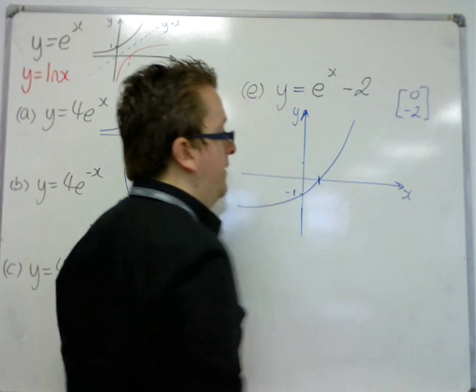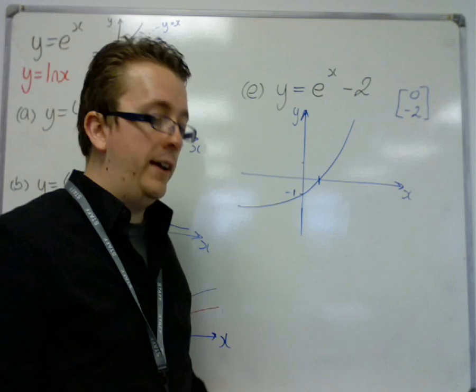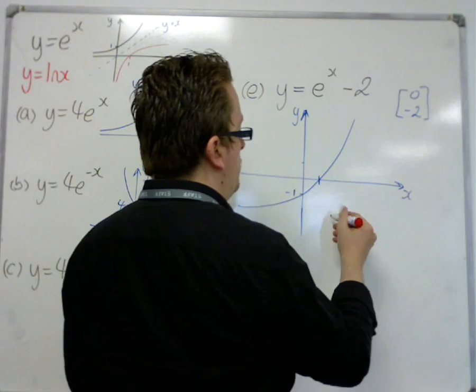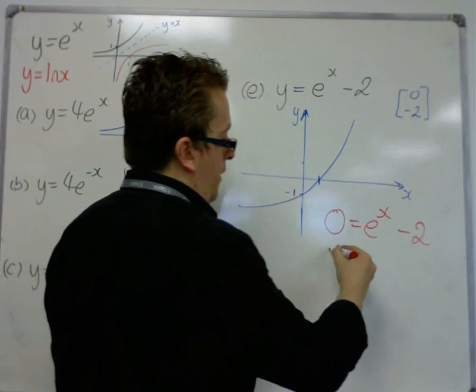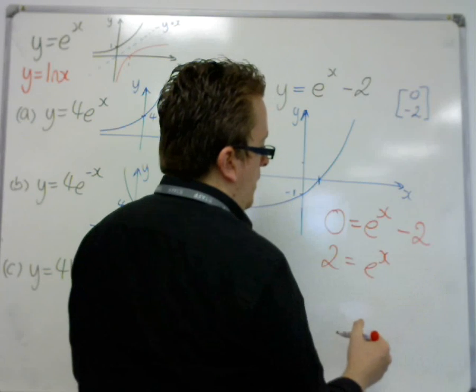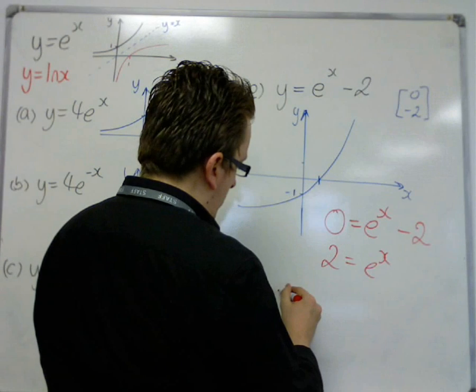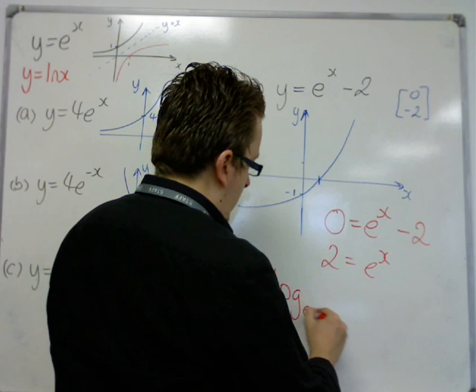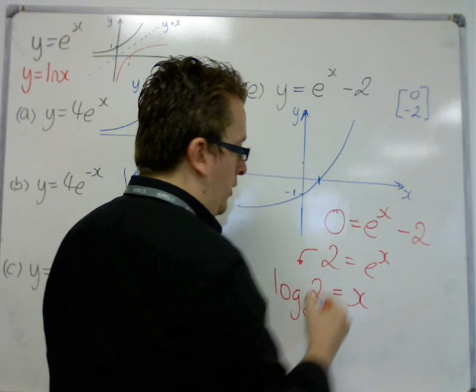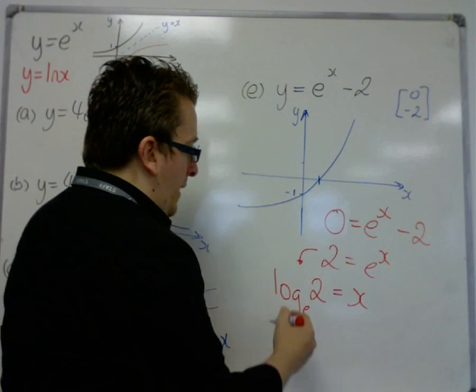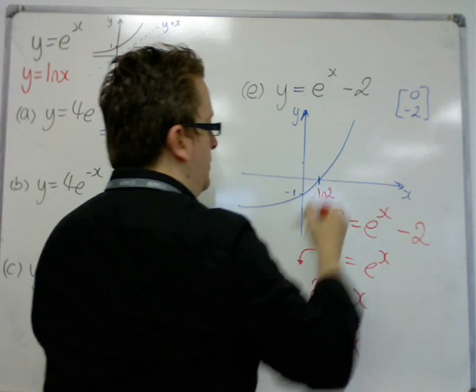Now, on this type of question, if this was an exam question, it's likely that we would also be asked to find where is it crossing the x axis. So, that is when y is 0. So, if I add 2 to both sides, then using our understanding of logarithms, then log e of 2 is equal to x. So, this is the conversion using core 2 logarithms, and log base e of 2 is just ln of 2. So, this is ln 2, log 2, okay.